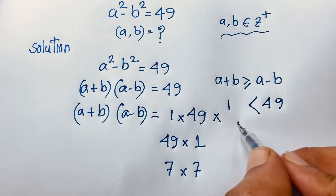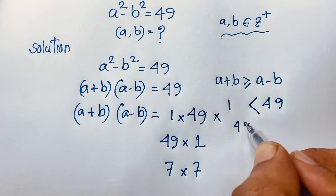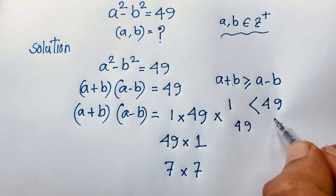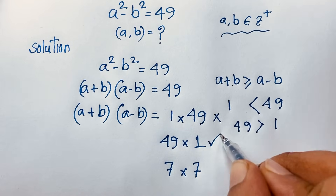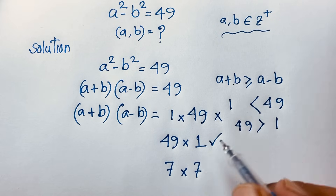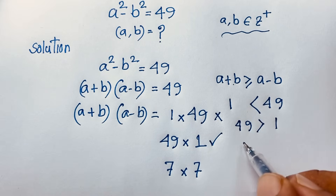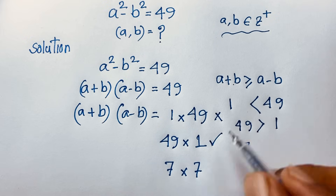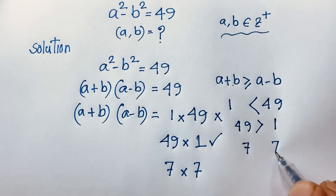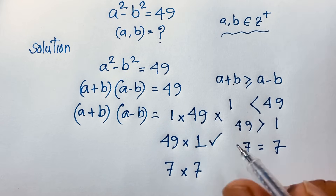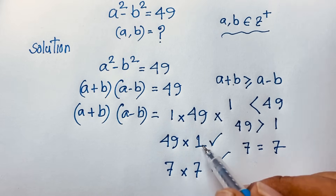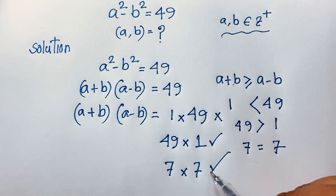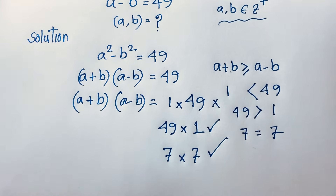The case a + b = 49 and a - b = 1 is valid since 49 ≥ 1. The case a + b = 7 and a - b = 7 is also valid since both are equal. So we have two possible cases to solve.